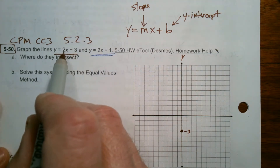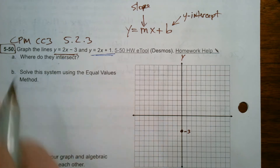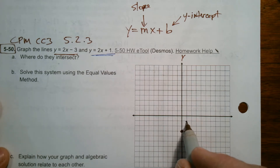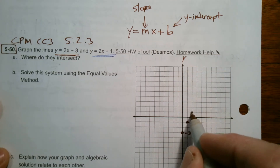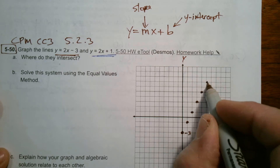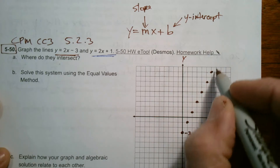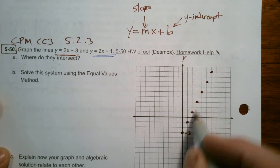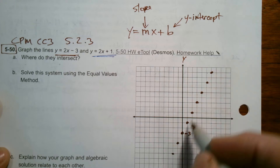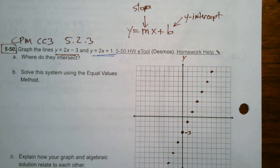Then I use the slope, or the growth rate — that 2 — to find the next point. Starting at the y-intercept, I'm going to grow up 2 over 1. Every time you go over 1 point, you're going up 2. So up 2 over 1, up 2 over 1, up 2 over 1. I can also go the other direction — down 2, backwards 1 — to show that same linear path.